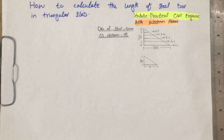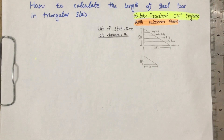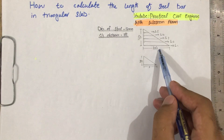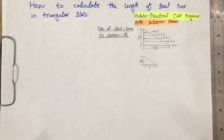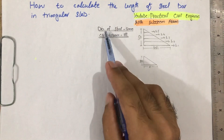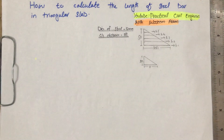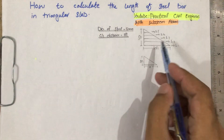Welcome to Practical Server Engineer with Viseem Alam. Today our new topic is how to calculate the length of a steel bar in a triangular slab. We have a slab with a length of 10 feet, a width of 5 feet, a center-to-center distance of 1 foot, and a diameter of steel of 12 mm. We have to find the length of each bar.